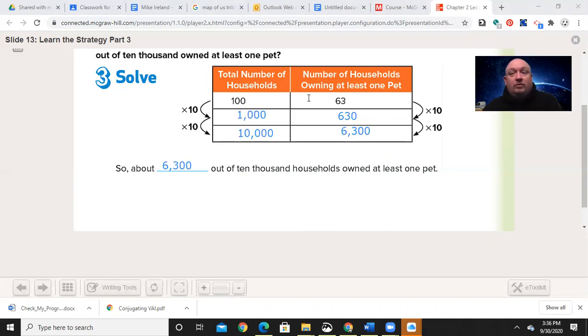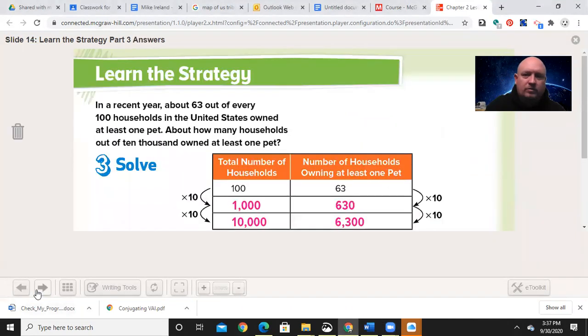If you have to multiply one side by 10 to keep that ratio correct, you're doing the same over here. Because really 63 over 100 is a fraction. That's 630 over 1,000 and then 6,300 over 10,000. Those would all be equivalent fractions.